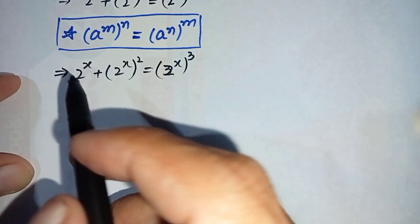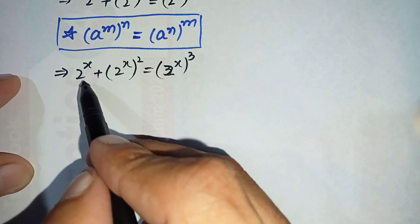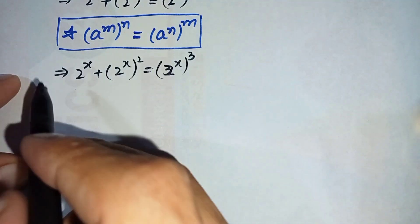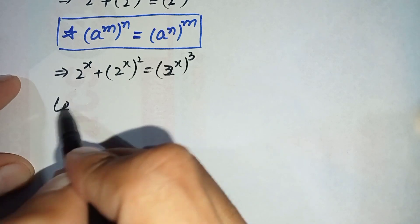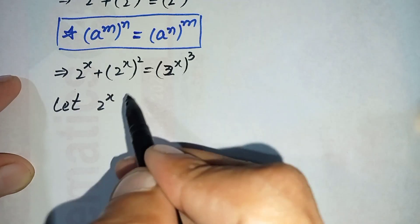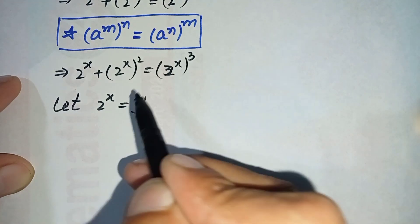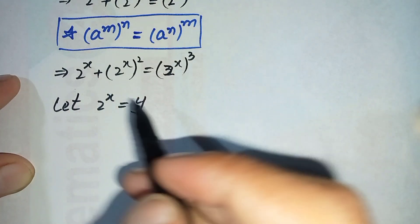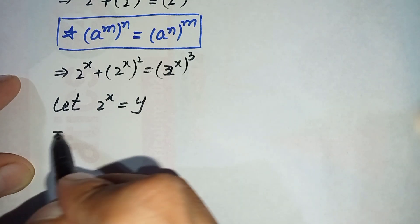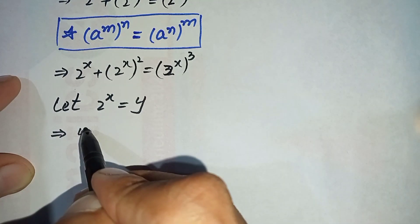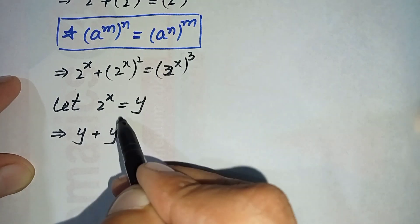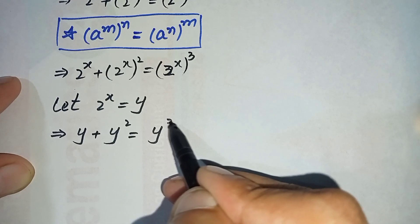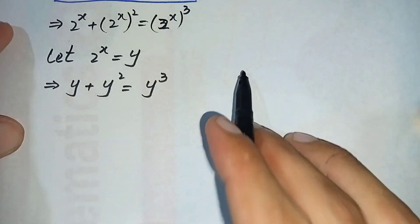As we can see, in all three terms the base 2 raised to power x is the same, so we let y equal to 2 raised to power x. We replace 2 raised to power x with y, so the equation becomes: y plus y squared is equal to y cubed.